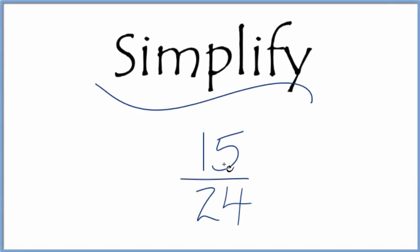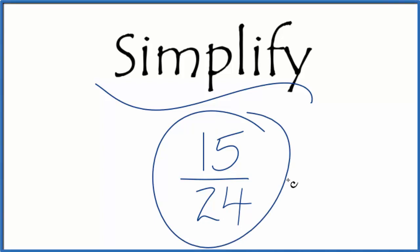If you're asked to simplify the fraction 15 over 24, here's how you do it. We want to take 15 24ths and reduce this to an equivalent fraction that has the same value but is in lowest terms.